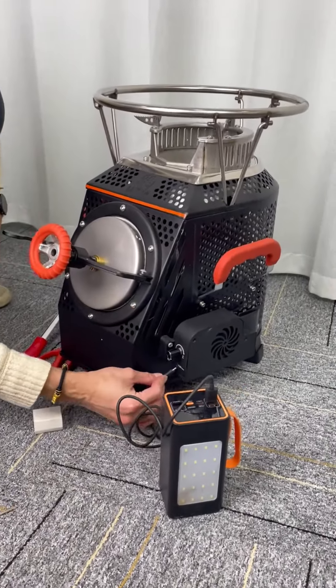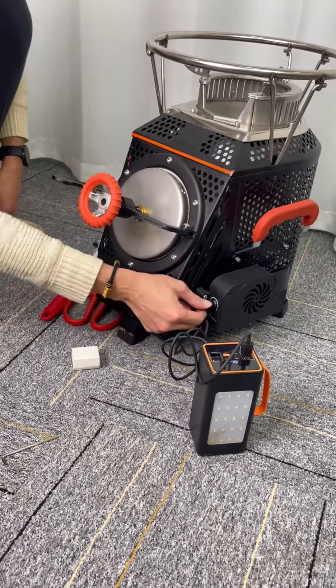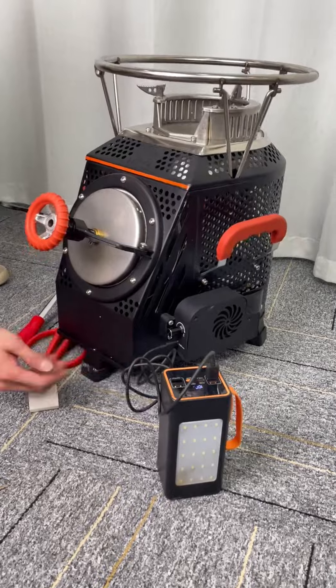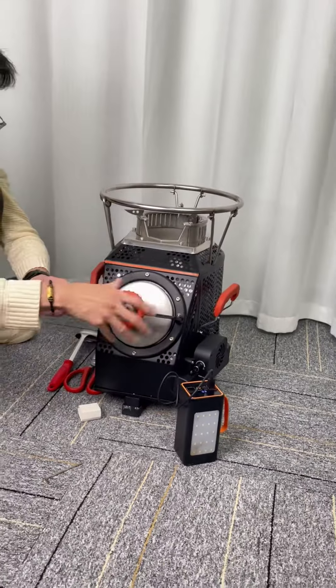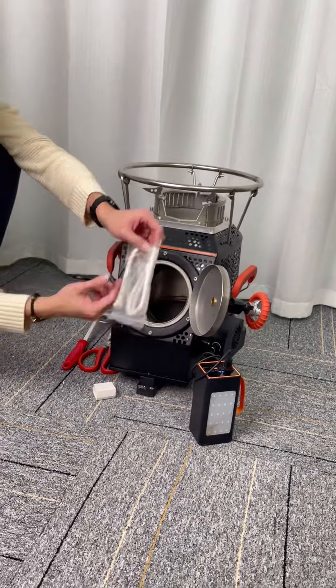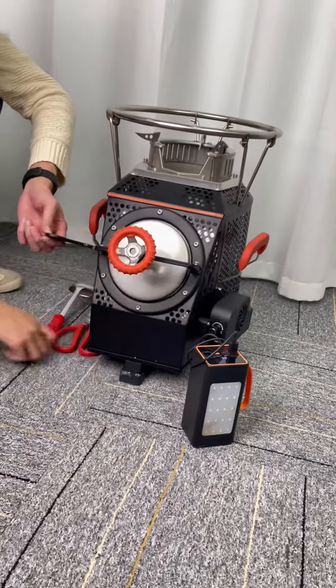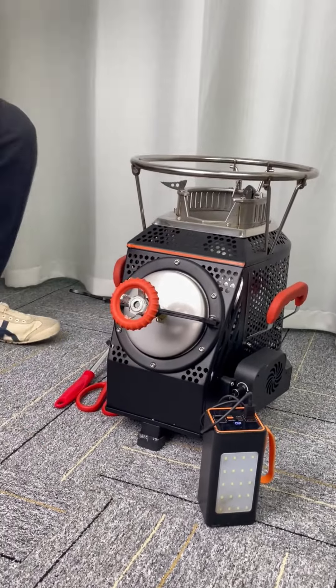The blower can use two kinds of power supply. One is the ordinary power bank. The other is the power cord. Turn on the data cable, plug in the power bank, and then plug in the blower. Then turn it on and listen for the sound.